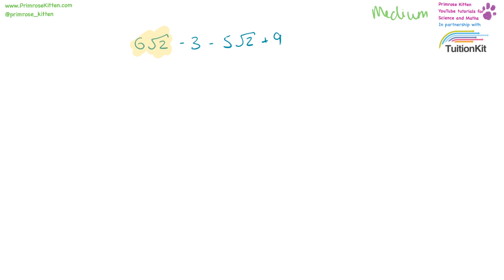6 square root 2 minus 3 minus 5 square root 2 plus 9. 6 square root 2 minus 5 square root 2 leaves us with square root 2, and minus 3 plus 9 gives us plus 6. So the answer is square root 2 plus 6.